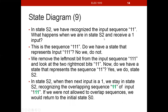In state S2, we've recognized the input sequence 1,1. What happens when we receive another 1? That makes the sequence 1,1,1. We don't have a state for 1,1,1, but because overlapping sequences are allowed, we remove the leftmost bit and look at the two rightmost bits: 1,1. That matches state S2. So when we're in S2 and input x is 1, we stay in state S2. If overlapping were not allowed, we'd return to the initial state instead.